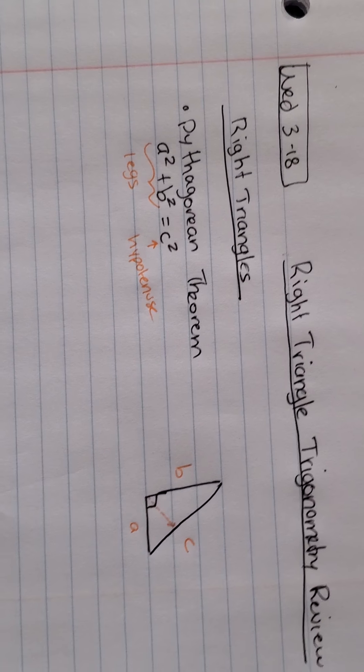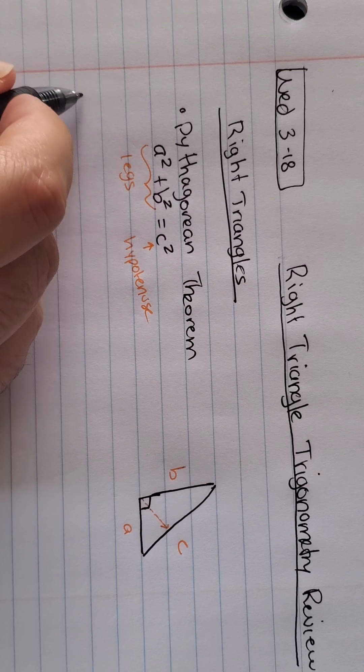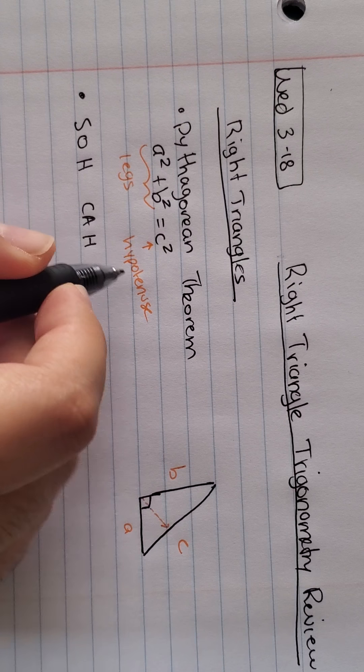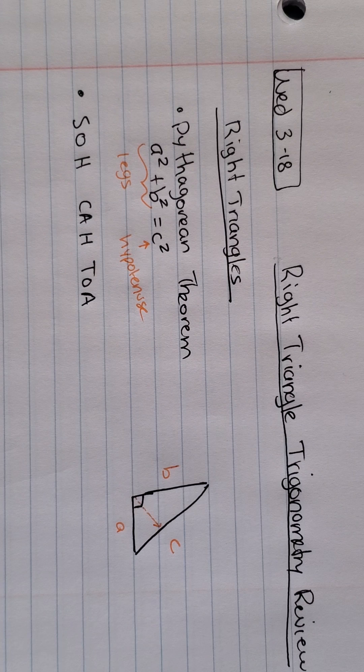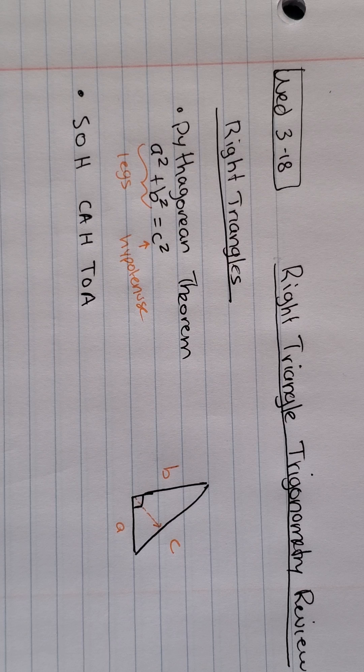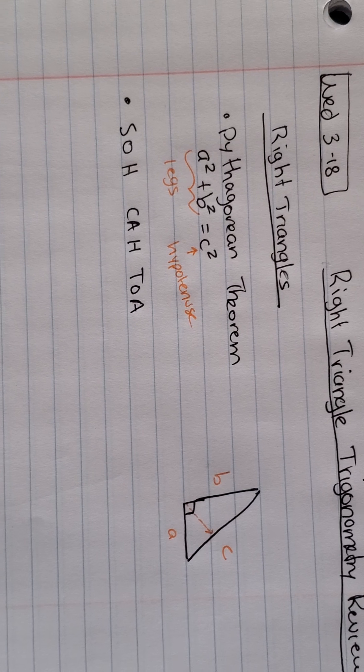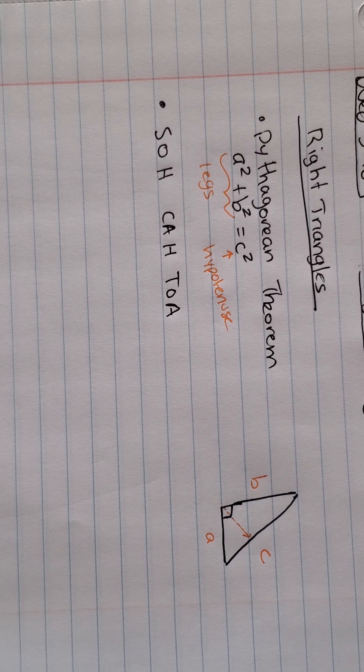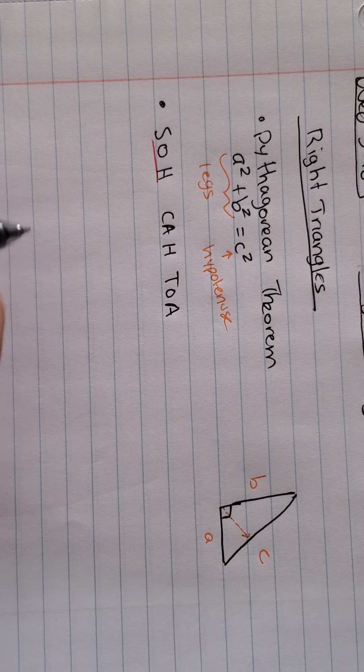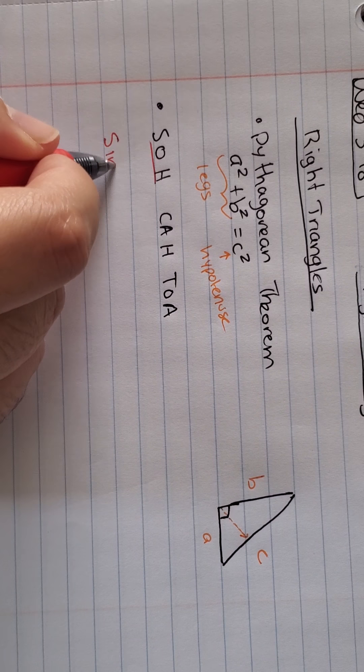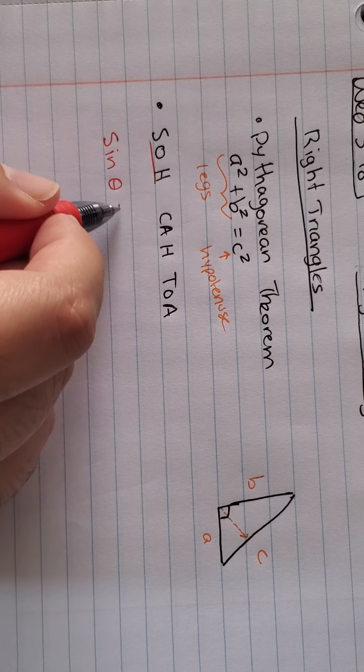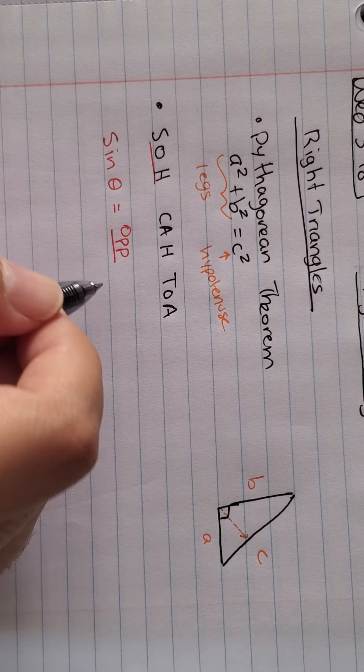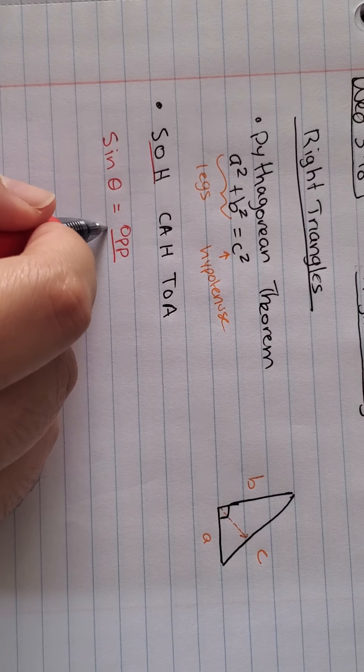Now, another tool for right triangles is SOH-CAH-TOA. And what that allows us to do is create three different equations, if you remember. So let me use different colors to match these. So let me start with SO. So if you remember, it's sine of some angle theta is equal to the opposite, I'll just abbreviate OPP, so opposite over hypotenuse.